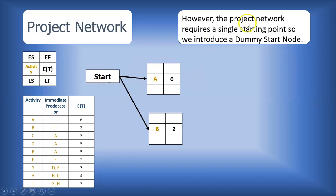You will note that the project network requires a single starting point. So since we had both activities A and B just hanging in at the start of the network, we introduce what we call a dummy start node. And the purpose of this dummy start node is just to create that single, unique starting point for a project.